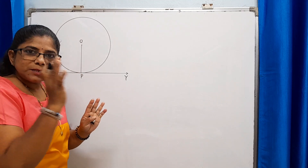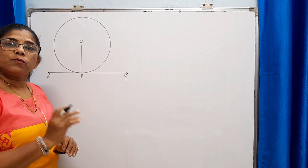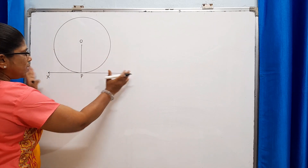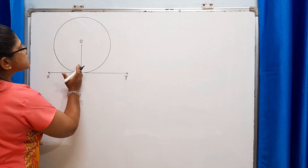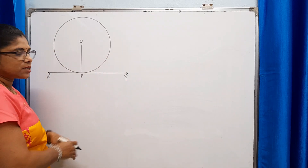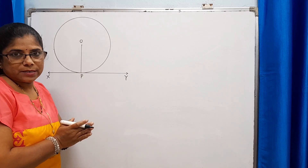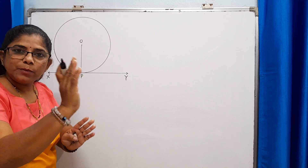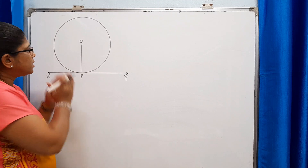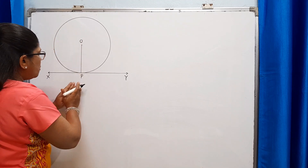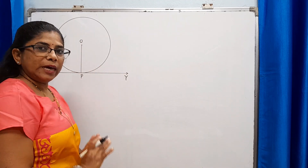This is the required figure to prove this theorem. Here XY is the tangent and P is the point of contact. OP is the radius drawn at the point of contact. So here we have to prove that OP is perpendicular to XY.